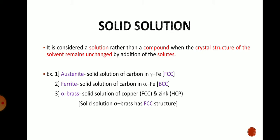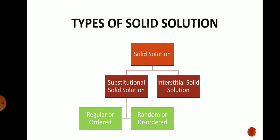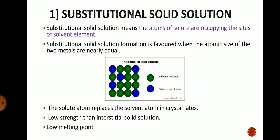There are two basic types of solid solution: first, substitutional solid solution; and second, interstitial solid solution. There are also two sub-types of substitutional solid solution: regular (ordered) and random. We will now see these types in detail.